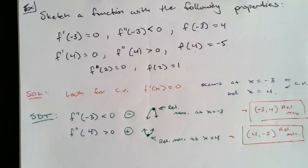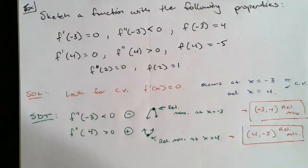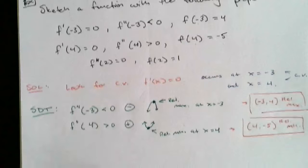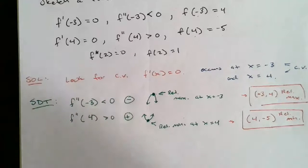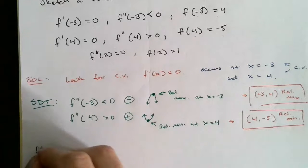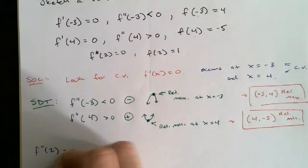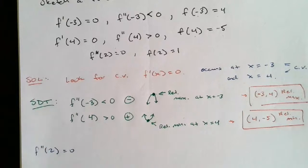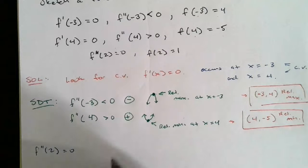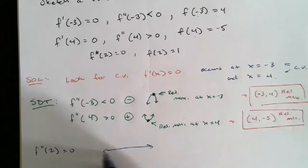We can also talk about inflection points. Typically, to find inflection points we take the second derivative and find where it's equal to 0 or does not exist. We were given that f''(2)=0, so a potential inflection point could occur there. To confirm it, we set up a number line for f'' and check the sign on either side.